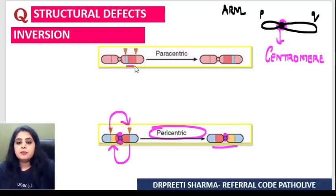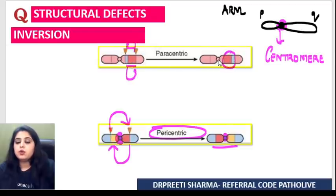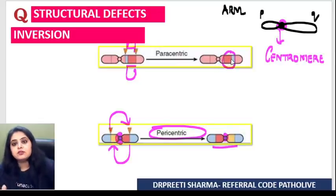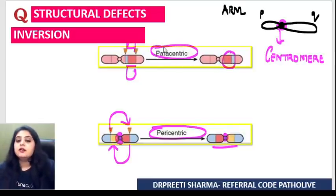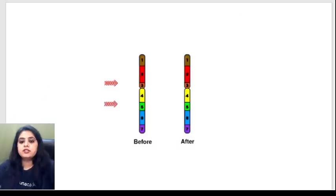Whereas if the inversion happens away from the centromere — look at the red and blue part flipping — and it is not involving the centromere, this is happening on one side of the centromere. So I call it paracentric inversion.